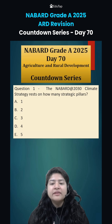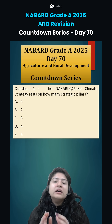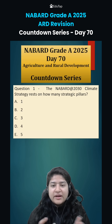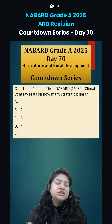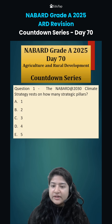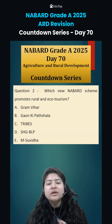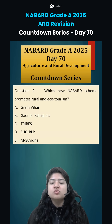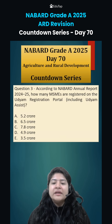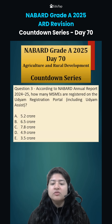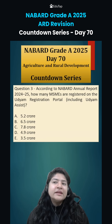Now for today's homework questions: First, the NABARD AT 2030 goal — their climate resilience strategy to be achieved by 2030 — rests on how many strategic pillars? Second, what new NABARD scheme promotes rural and ecotourism? Third, according to the NABARD annual report, how many MSMEs are registered on the Udyam portal?